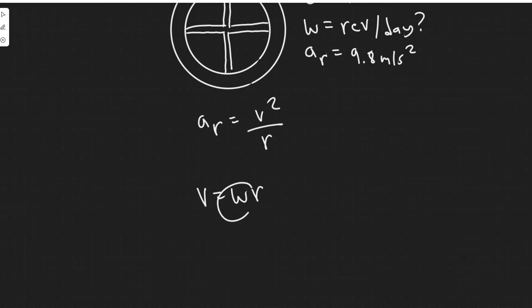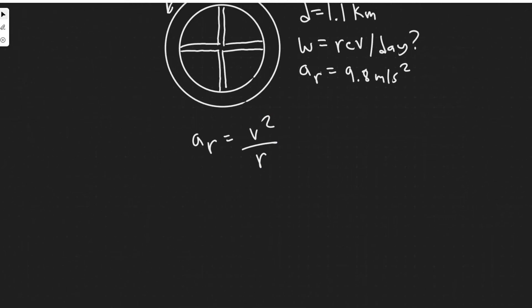So if we want to solve for omega, all we have to do is divide our velocity by the radius. And then when we have omega, we just have to convert it into the correct units. So the first thing we have to do is solve for v. So we can multiply both sides by r, and then just square root. So essentially, you're going to get v equals the square root of r times a sub r.